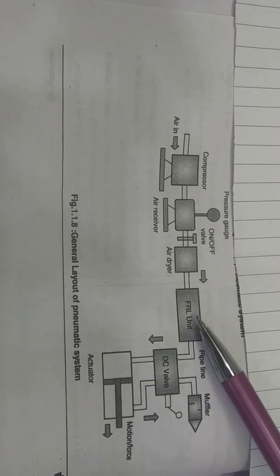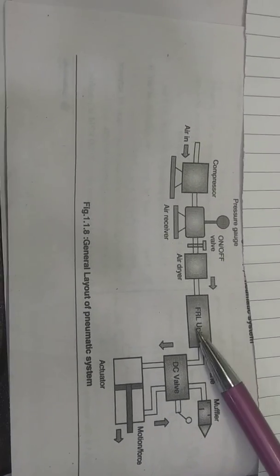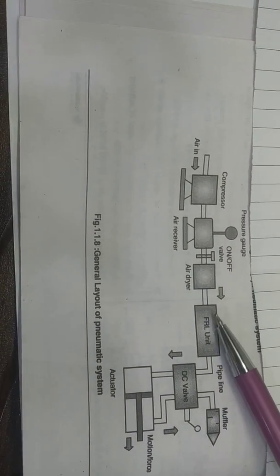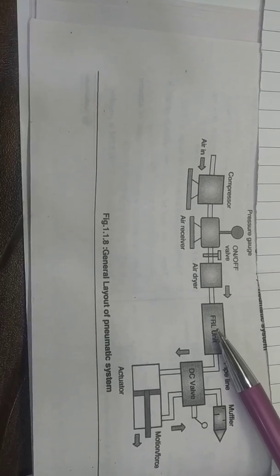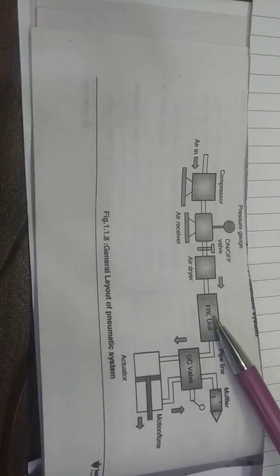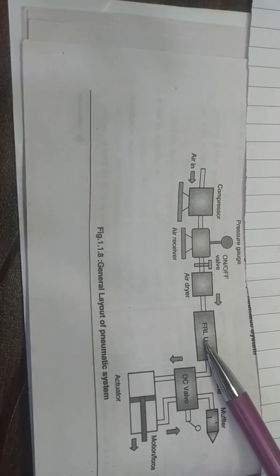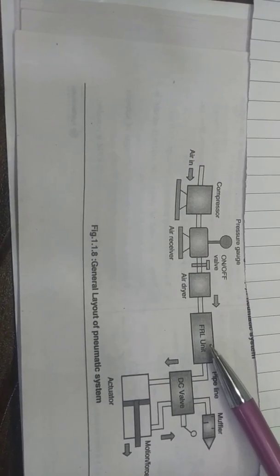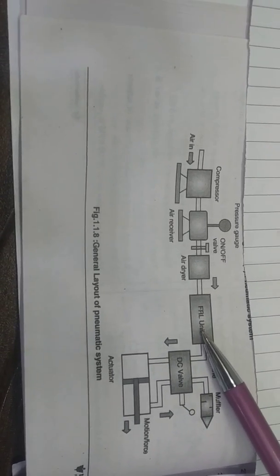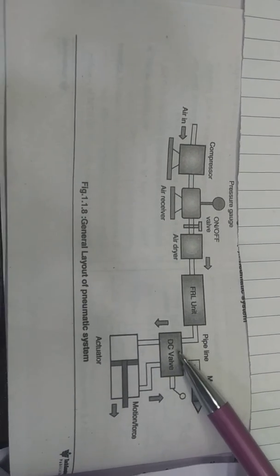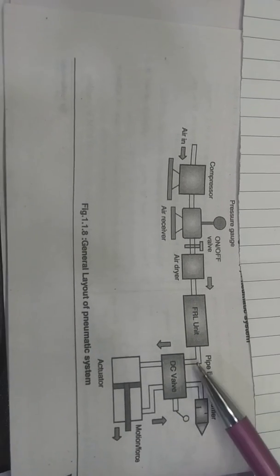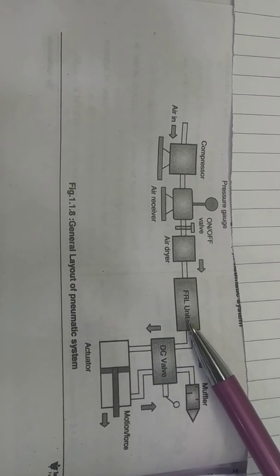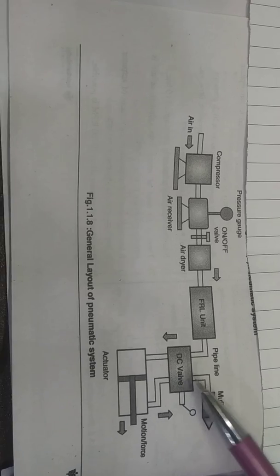The next component is the FRL unit — F stands for filter, R means regulator, and L means lubrication. Whatever air comes from the dryer gets filtered through the filter. The regulator has a knob through which we can regulate the pressure of the air. For lubrication, some oil particles are added into the compressed air. If dry air is supplied to the components, it will cause corrosion of the moving parts, so lubrication is provided to avoid this.